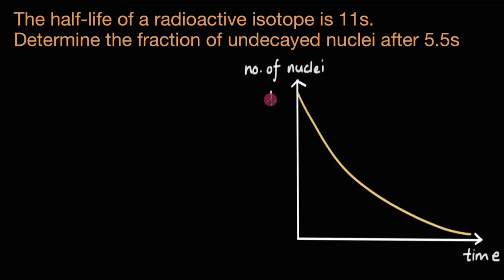We can say that initially there are N0 number of radioactive nuclei. And the time it takes for this number to fall to its half, for 50% of the nuclei to decay, for it to become N0 by 2, the time required is called a half-life. So this time right here is one half-life.